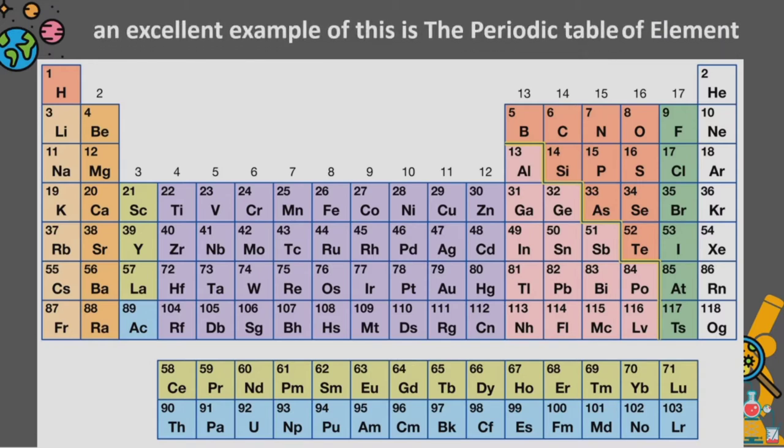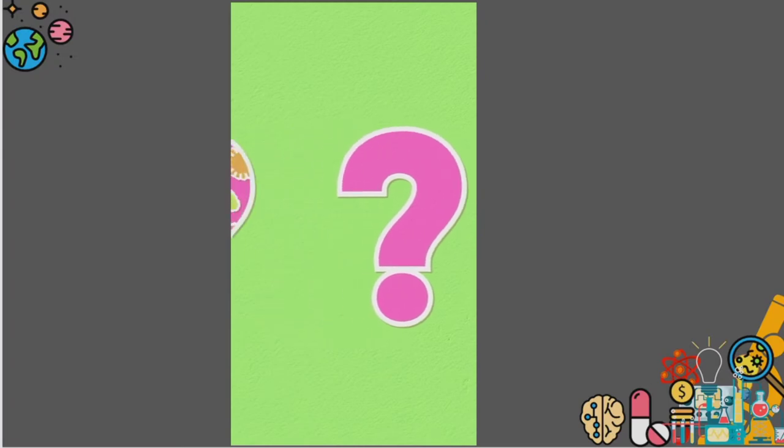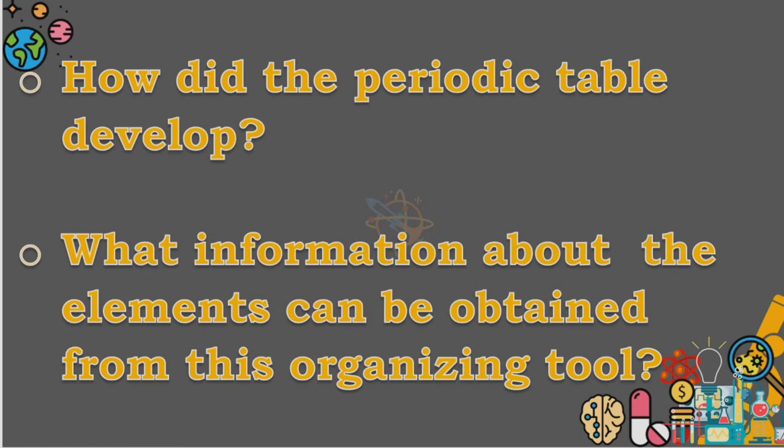An excellent example of this is the periodic table of elements. At the end of this lesson, we will be able to answer the following questions. First, how did the periodic table develop?